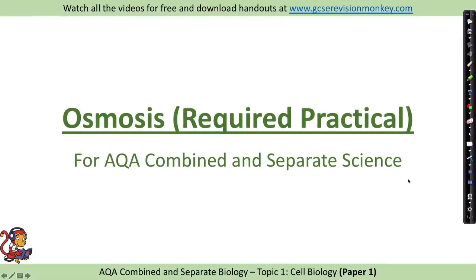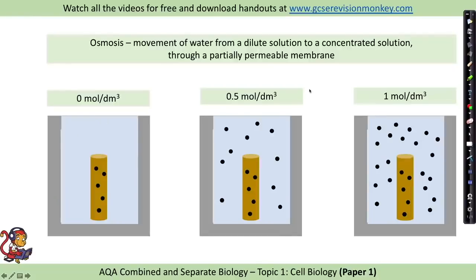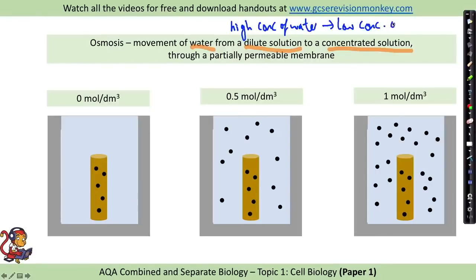Osmosis required practical. Let's start by reminding ourselves of the definition of osmosis. Osmosis is the movement of water from a dilute solution to a concentrated solution through a partially permeable membrane. You may know a version that talks about water moving from high concentration of water to low concentration — it means the same thing. A dilute solution has a high concentration of water; a concentrated solution has a low concentration of water. You're more likely to see the terms dilute and concentrated in an exam.